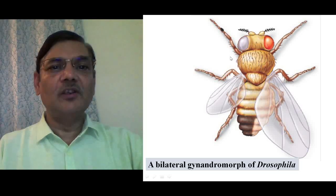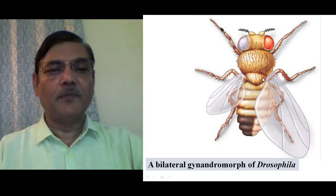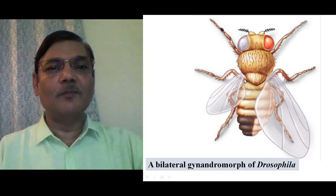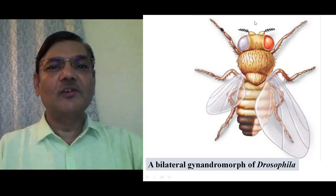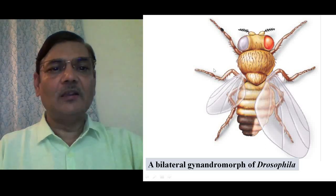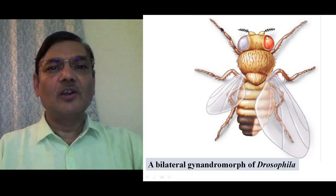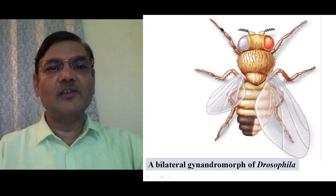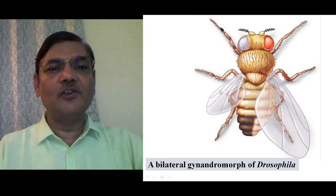This is a gynandromorph fly — specifically a bilateral gynandromorph of Drosophila melanogaster. In this diagram you can see the right side and the left side of the fly. On the right side, female features are seen; the right side of this fly is actually female, and the left side is male.